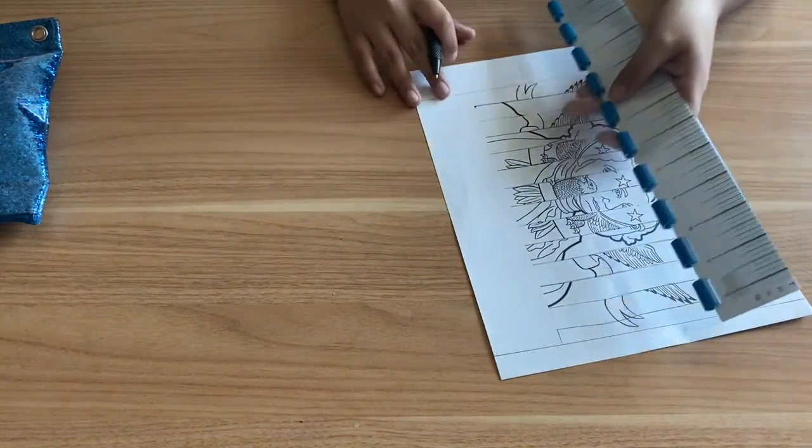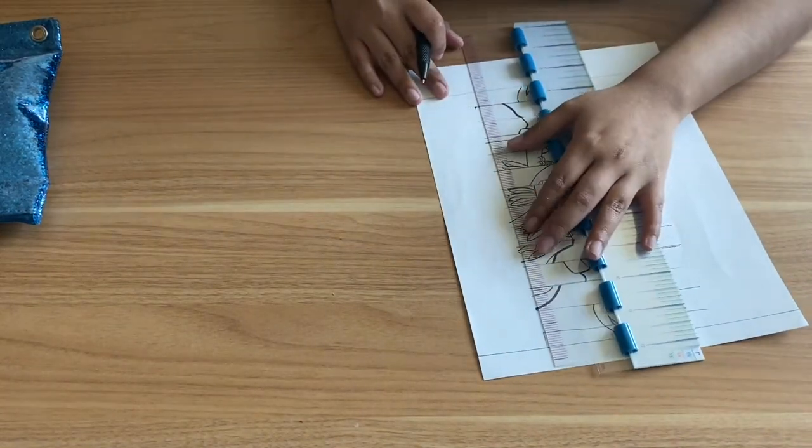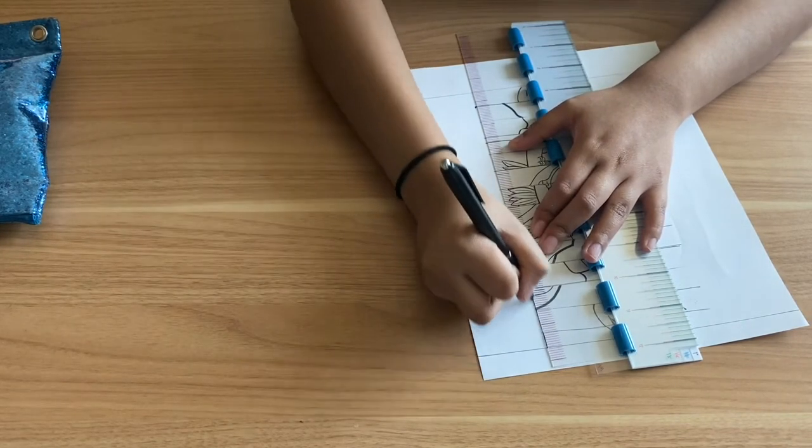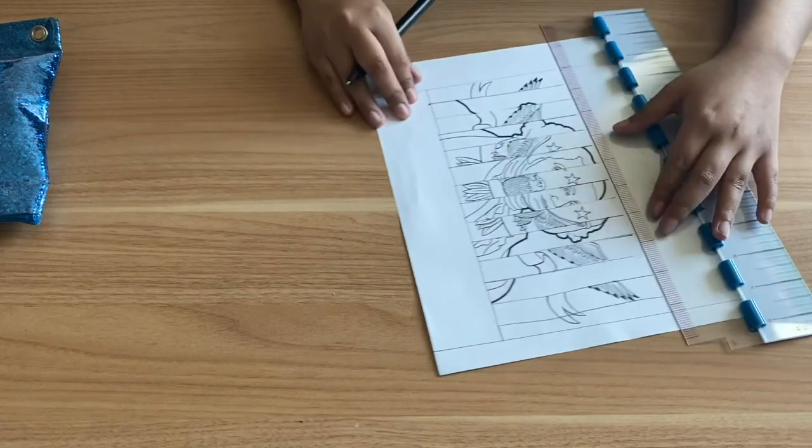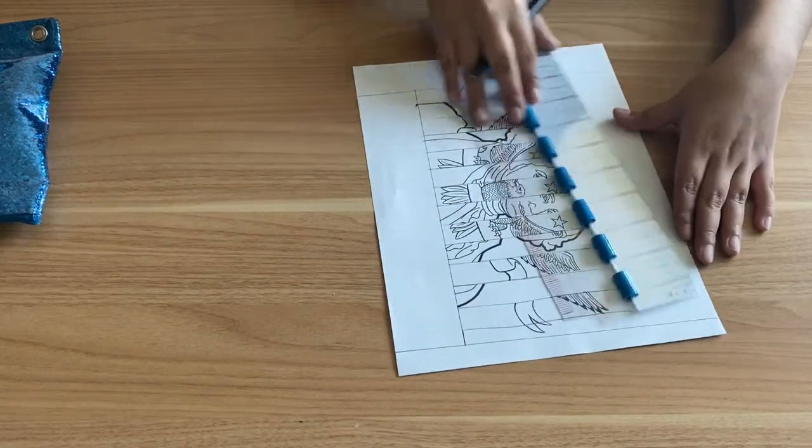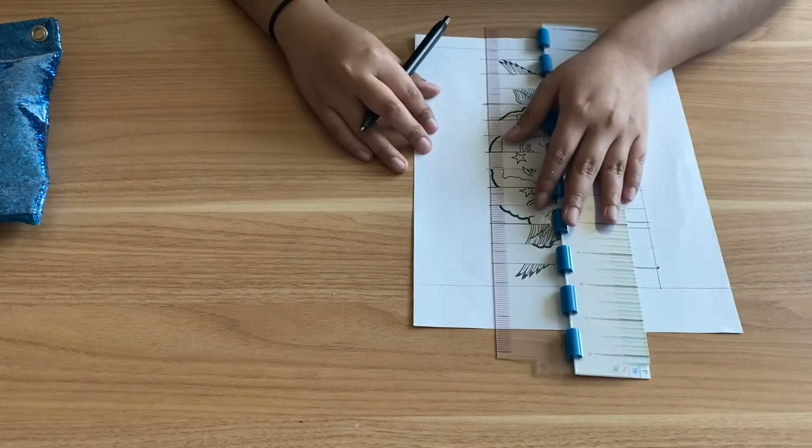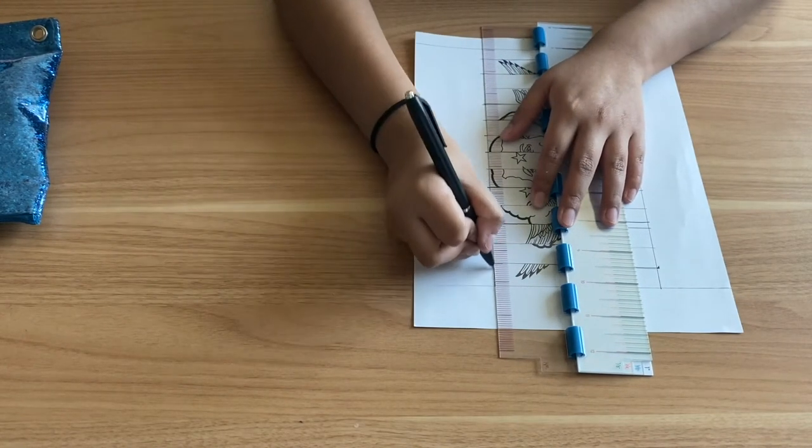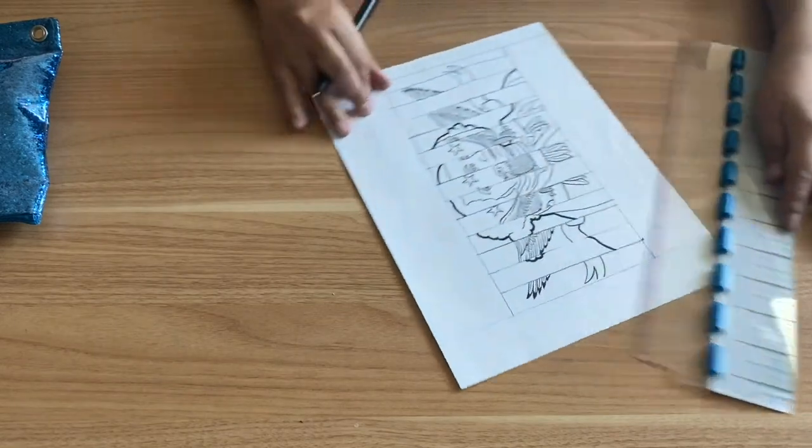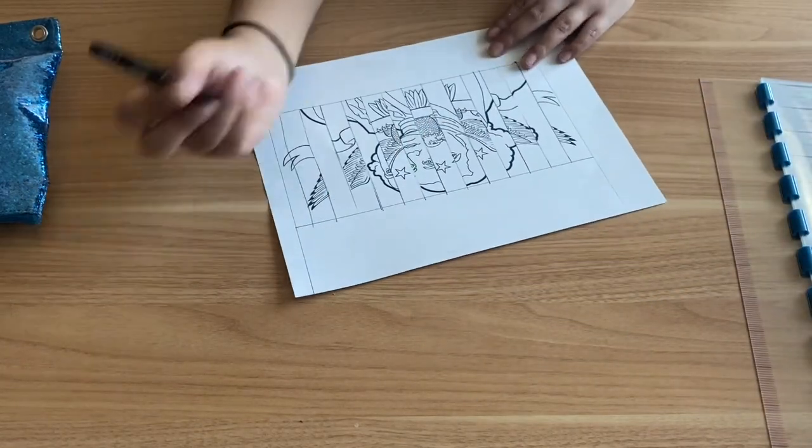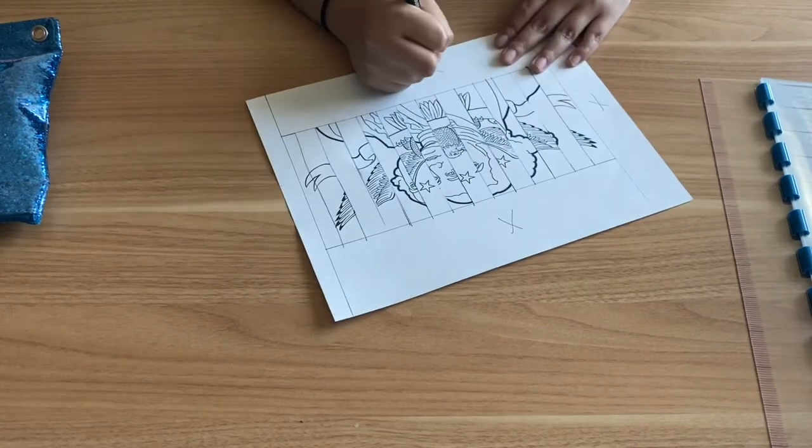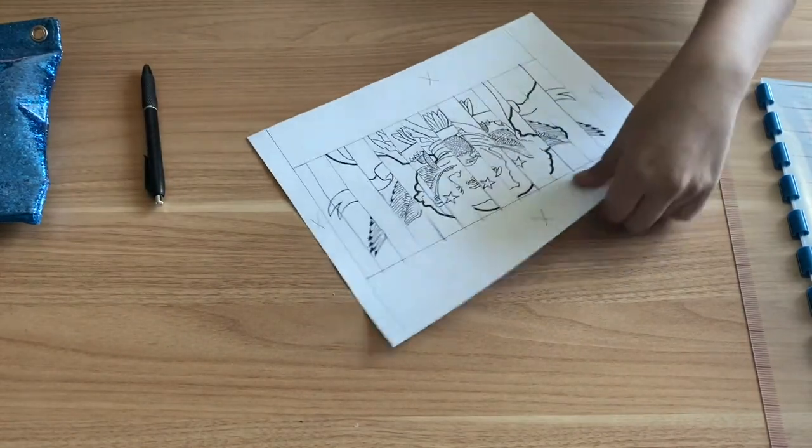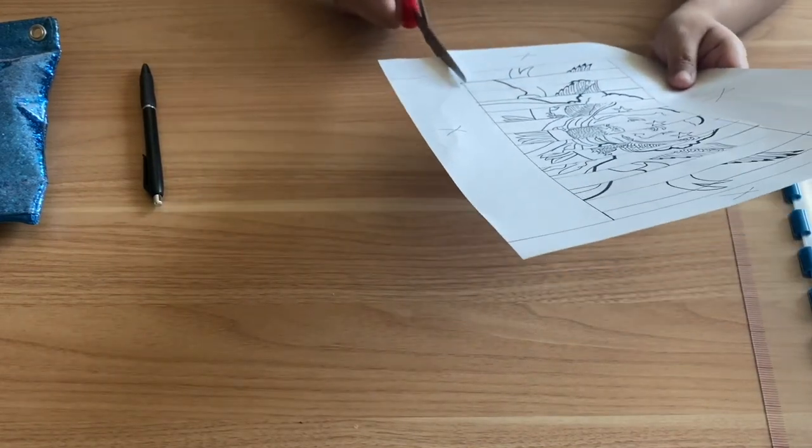And with your ruler, go ahead and measure where the end of all the little sticks are and draw a line. And do the same for the top. Like so. And just so we have an even piece of paper. And as you can see, you are going to cut this piece out, this piece, this piece, and this piece. So, with your scissors, go ahead and start cutting along the lines.